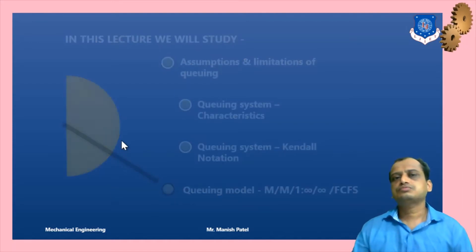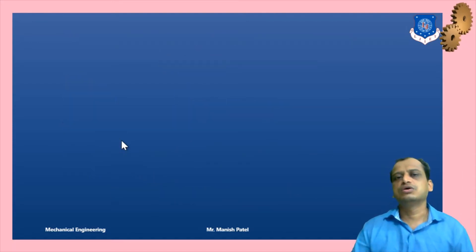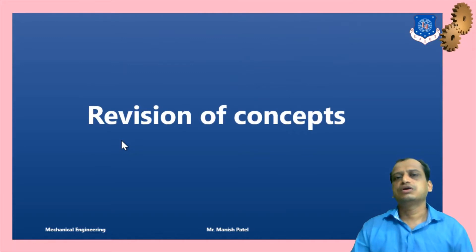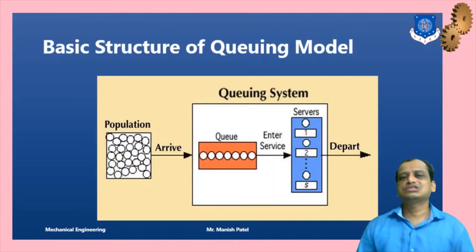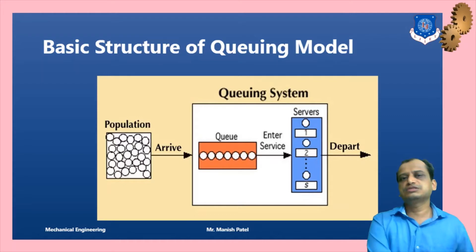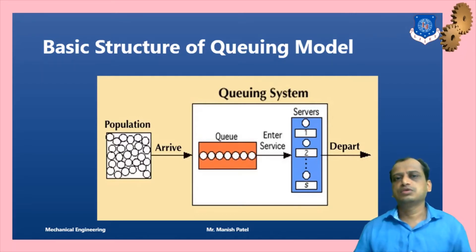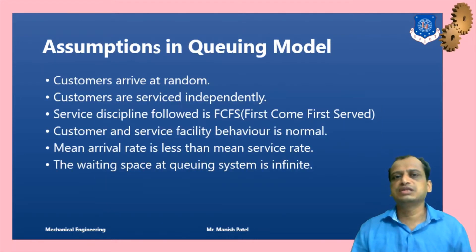First of all, we will quickly revise the concepts. The basic structure of a queuing system: we have a population of customers who arrive into a system comprising of the queue and the server. We already discussed this in the previous lecture.